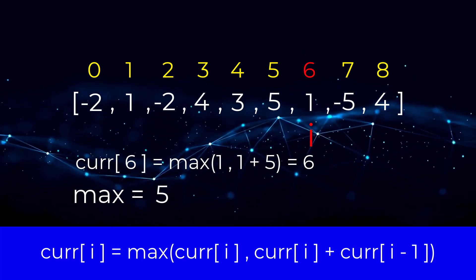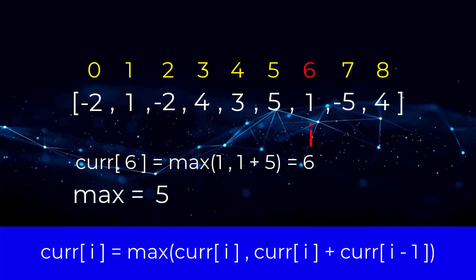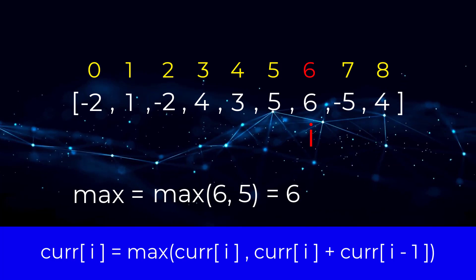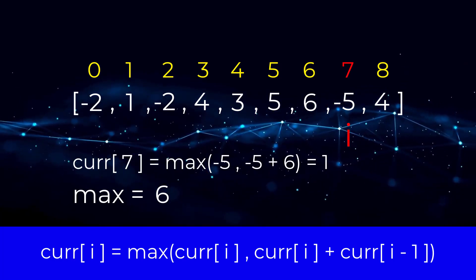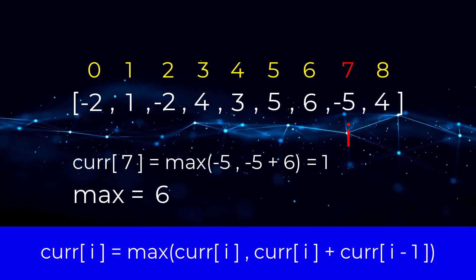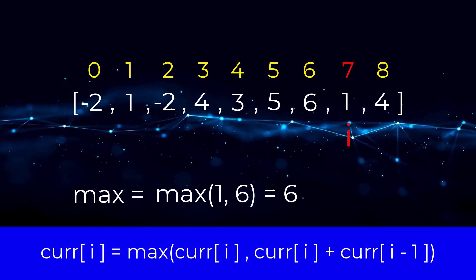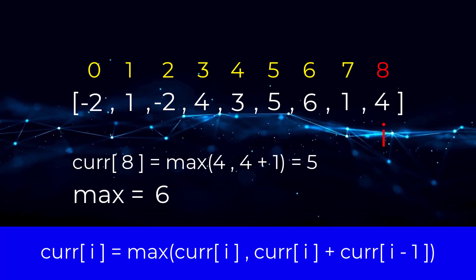Next, we move to value one. We compute the max between one and six. Six is set as our current position. Then we compute our new max, which would be six. Then we move to negative five. The max between negative five and one is one, so we set that as our current position. Then we compute the max between six and one, which equals six.